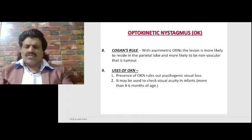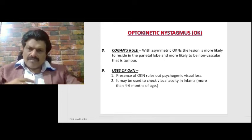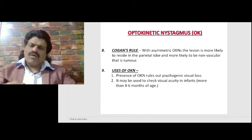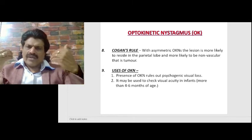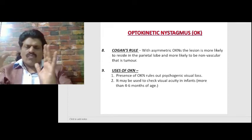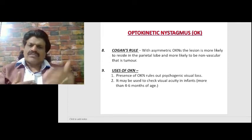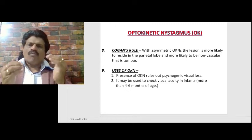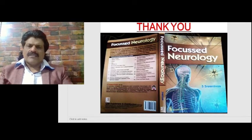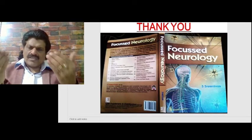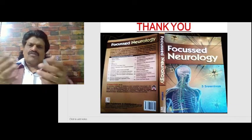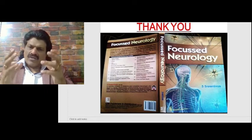Another use of optokinetic nystagmus is to check visual acuity in infants more than four to six months of age. In infants, we cannot test visual acuity directly because they cannot cooperate, so we can use the optokinetic nystagmus response to assess it. These are the key concepts: pursuit movements, saccadic movements, ruling out hysterical blindness, and testing infants four to six months of age.